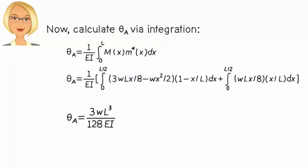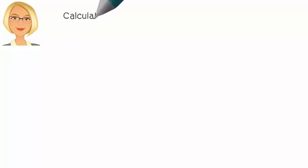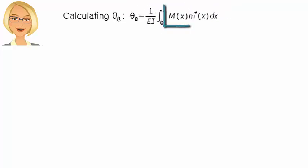We are going to repeat the virtual work method in order to determine theta B. We can write... Here, M(x) is going to be the same as before.